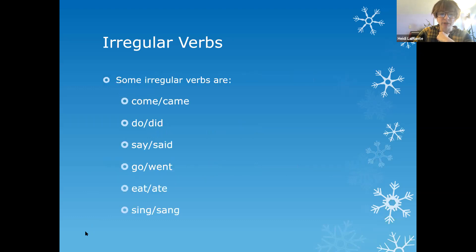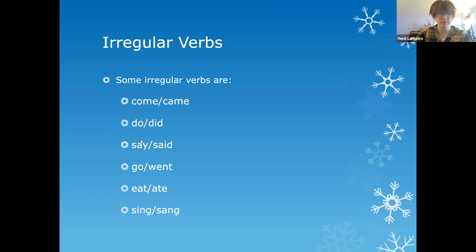Let's look at some other irregular verbs. On the left-hand side I have the present tense of the verb. On the right-hand side I have the irregular verb spelled. Let's read them together: come, came — 'came' is the past tense. Do, did. Say, said. Go, went. Eat, ate. Sing, sang.